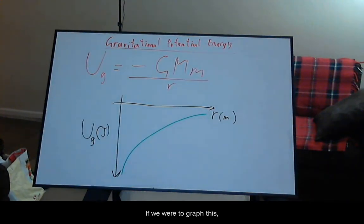If we were to graph this, then potential energy is more negative at small radii but approaches zero at infinite radius.